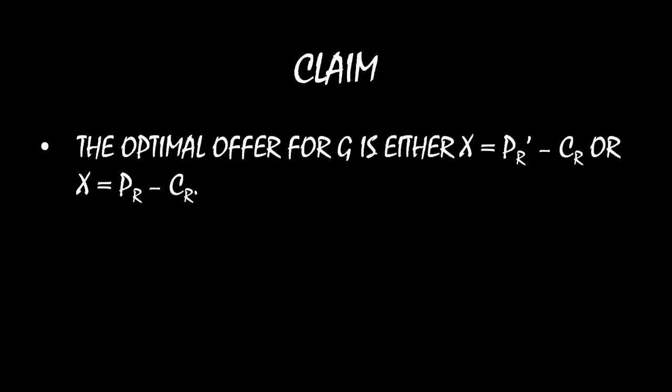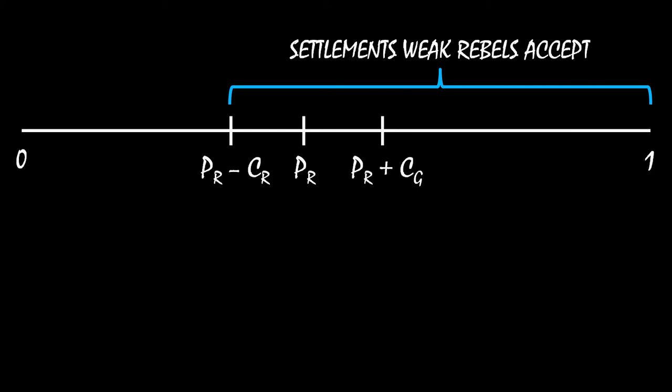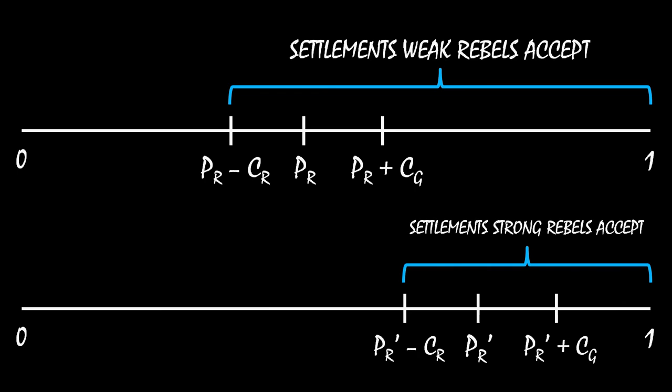Visually: if you make the offer PR minus CR, that is the amount the weak rebel group is willing to accept. Or you might offer PR prime minus CR — that's the minimum amount that even the strong rebel group needs to accept. Notice that as the government, you don't know whether the rebel group is weak or strong. So if you make the larger offer of PR prime minus CR, that's the conservative route, and the weak rebel group will also accept. Whereas if you make the smaller offer — the aggressive bargaining stance of PR minus CR — just the weak type accepts and the strong type rejects.